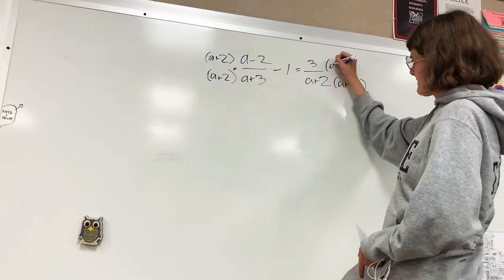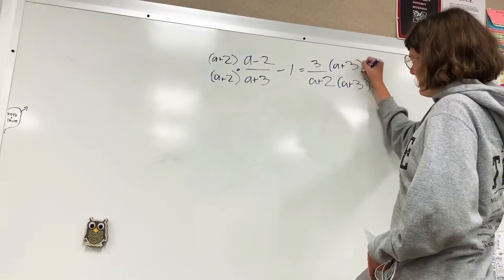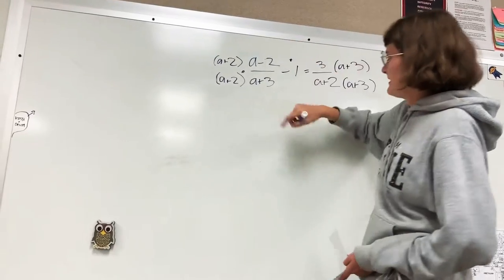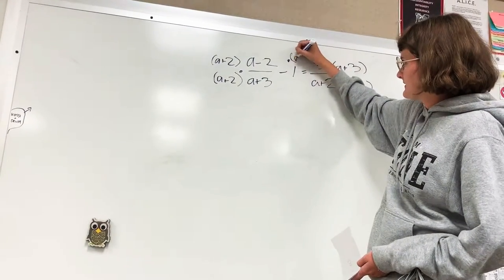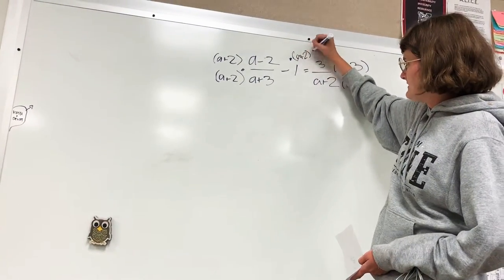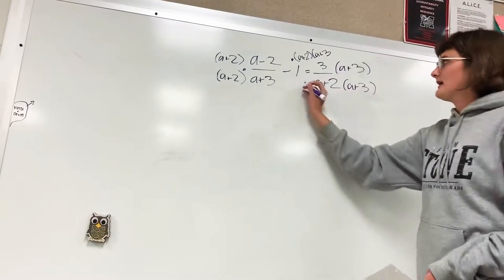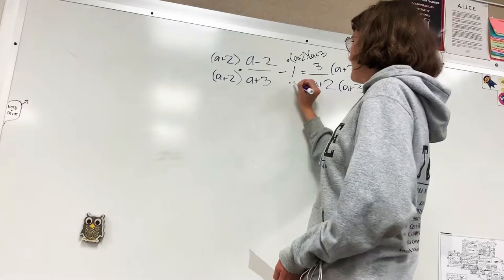And then for this, you're going to multiply this by (a+2) and (a+3), and this will turn into a, and you also multiply on the bottom.